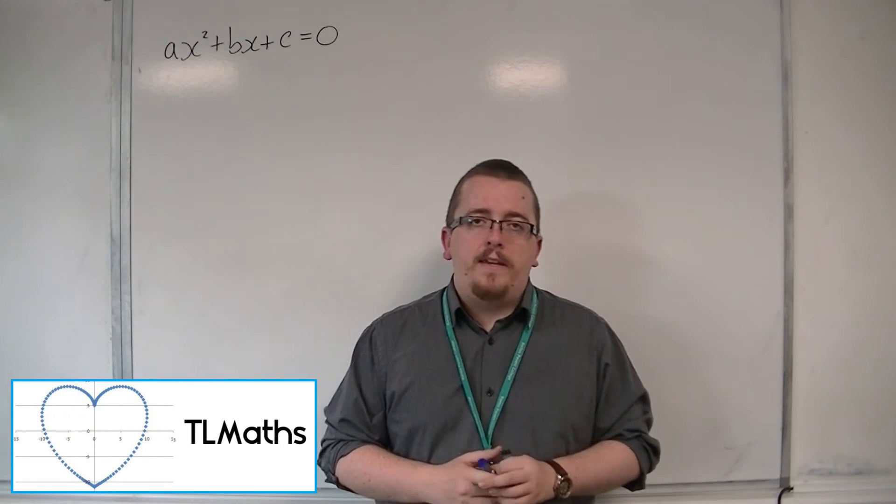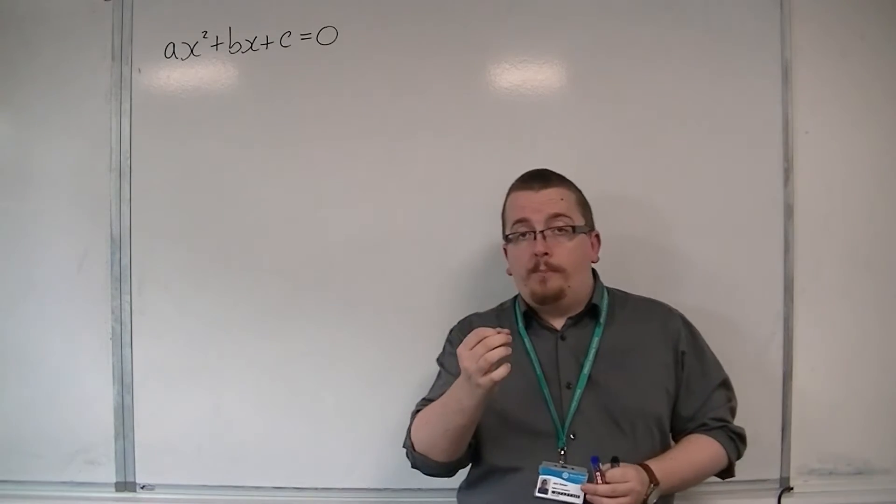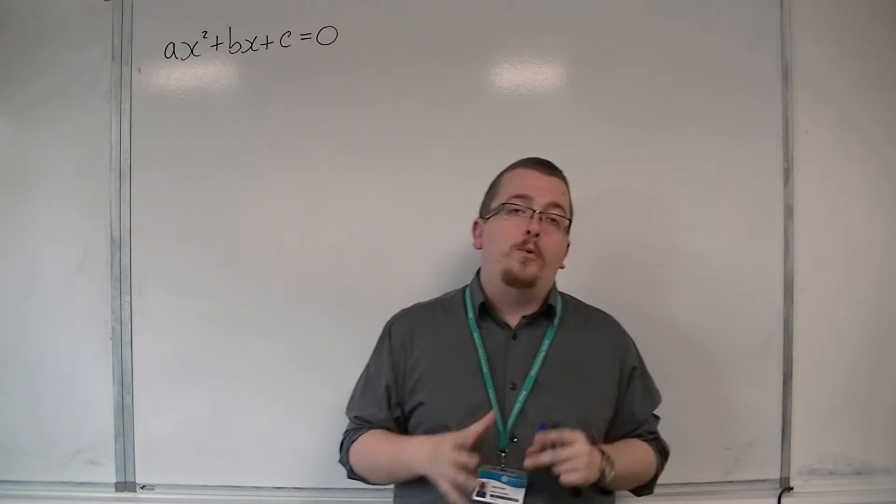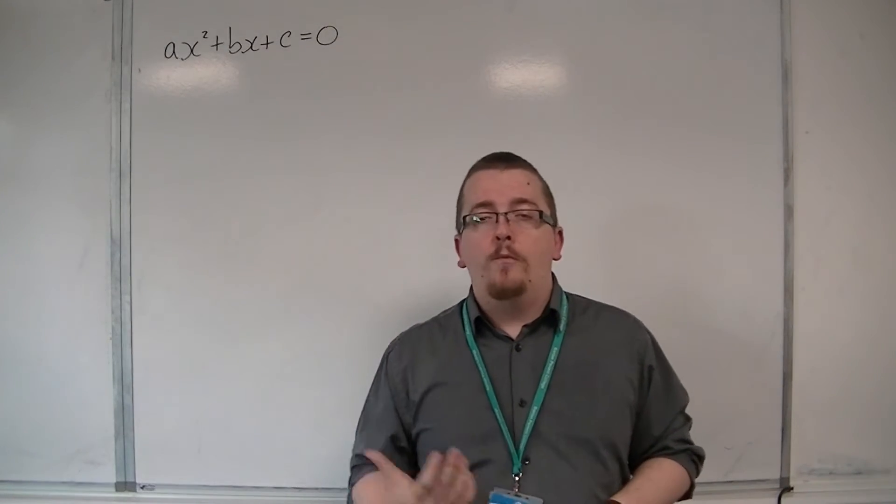So when you're in GCSE, you're told the quadratic formula: x is equal to minus b, plus or minus the square root of b squared minus 4ac, all over 2a. And you're not told where this magic formula comes from.